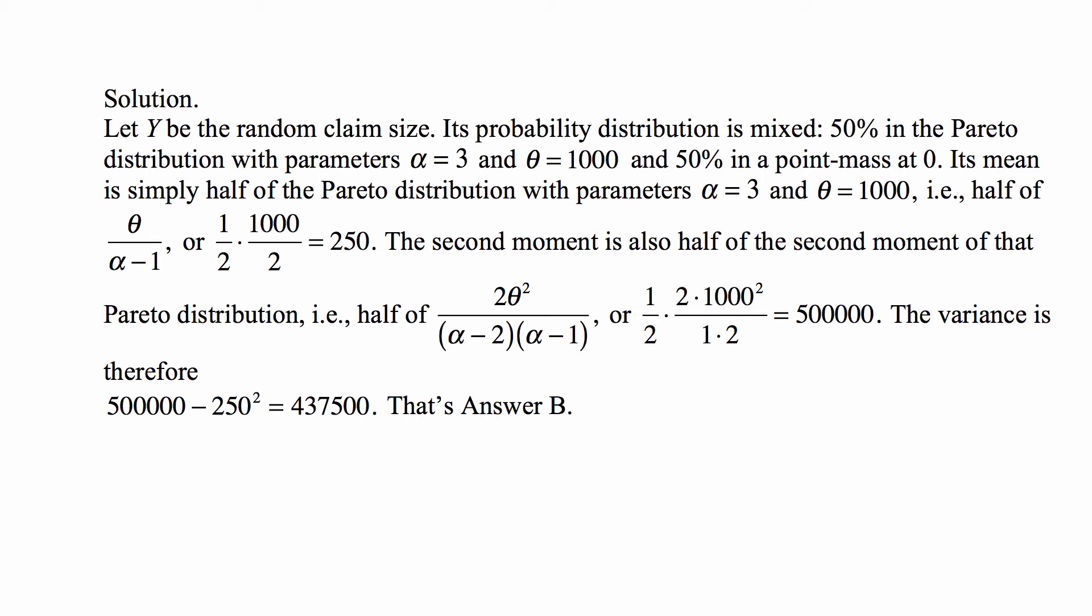That ends up being 500,000. And the variance is 500,000 - 250² = 437,500, which is answer B.